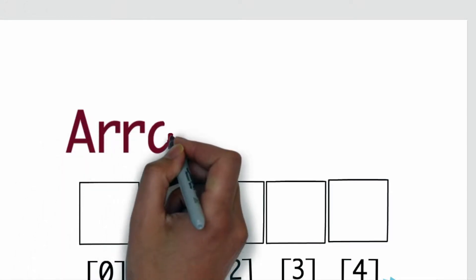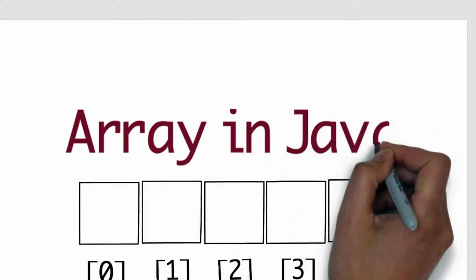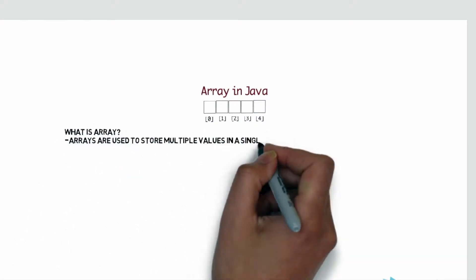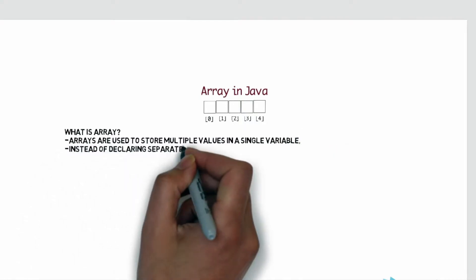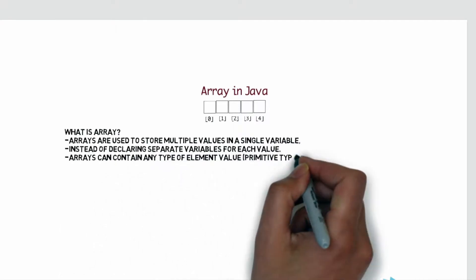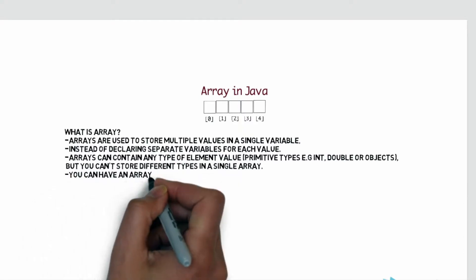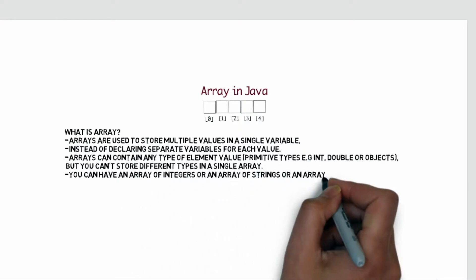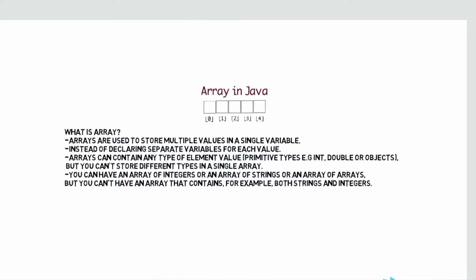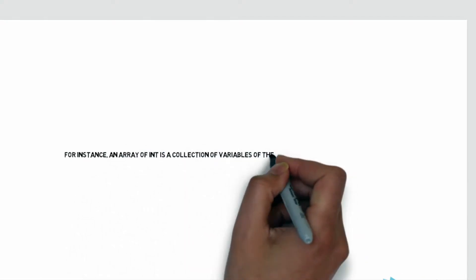In this video we will see how we can create arrays and implement Java arrays using integers. Arrays are used to store multiple values in a single variable instead of declaring separate variables for each value. Arrays can contain any type of element such as int, double, or objects, but you cannot store different types in a single array. For instance, an array of int is a collection of variables of type int.